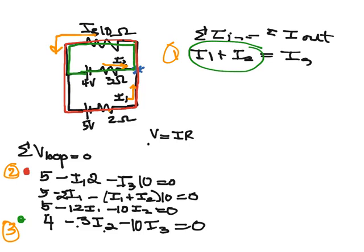Okay, I'm going to do the same thing for my third equation. I'm going to take I1 plus I2 and put it in for I3. So I have 4 minus 3 I2 minus 10 I1, I1 plus I2 equals 0.